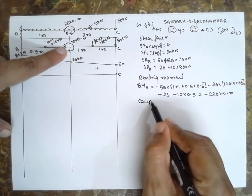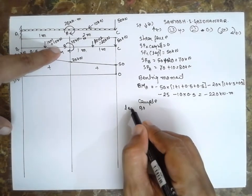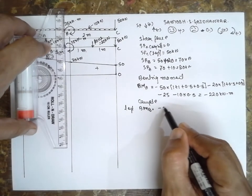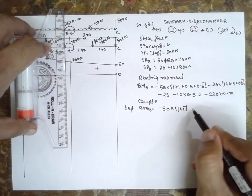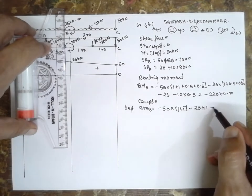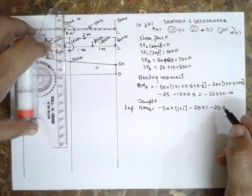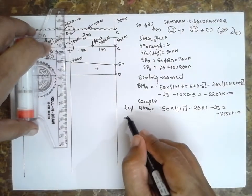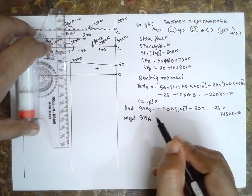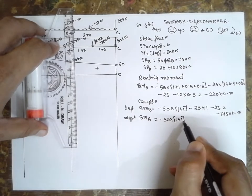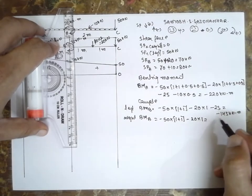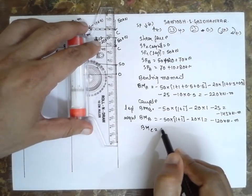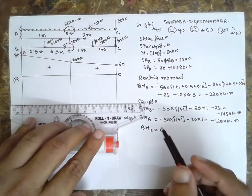Next at B, there is a couple. If it is a couple you have to consider left and right. BM at B left is minus 50 into distance that is 2, that is 1 plus 1, next minus 20 into 1, and there's a couple minus 25. The answer will be minus 145 kilonewton meter. Right side, BM at B right is minus 50 into distance 1 plus 1, minus 20 into 1, answer is minus 120 kilonewton meter. And BM at C will be 0.